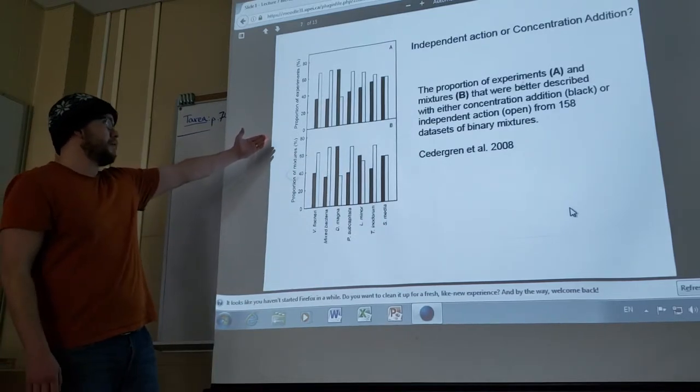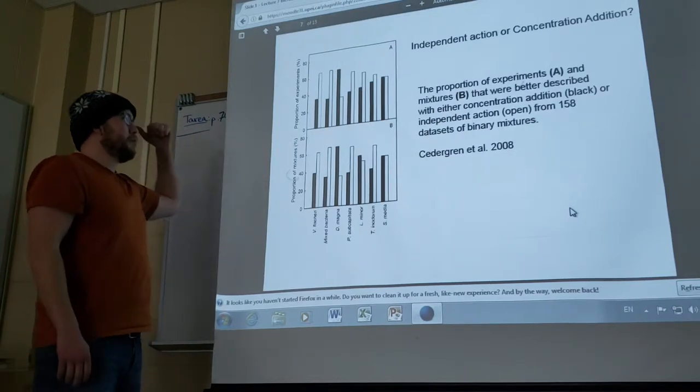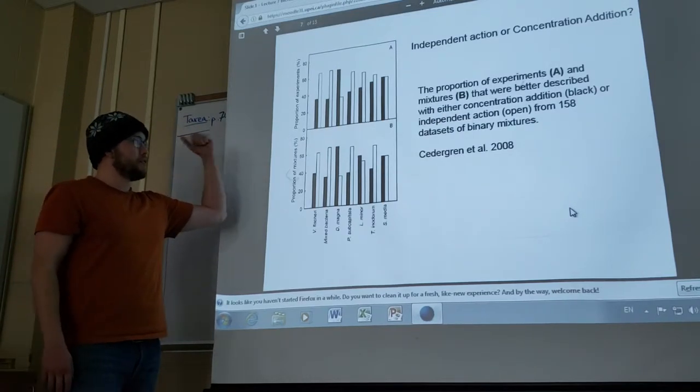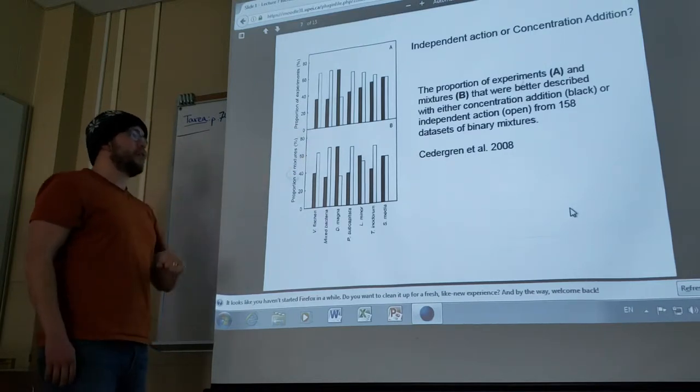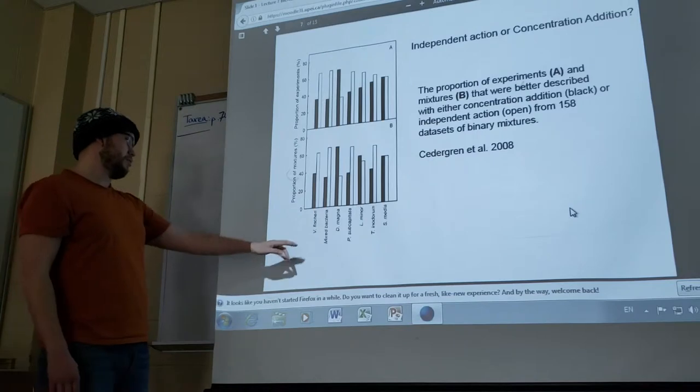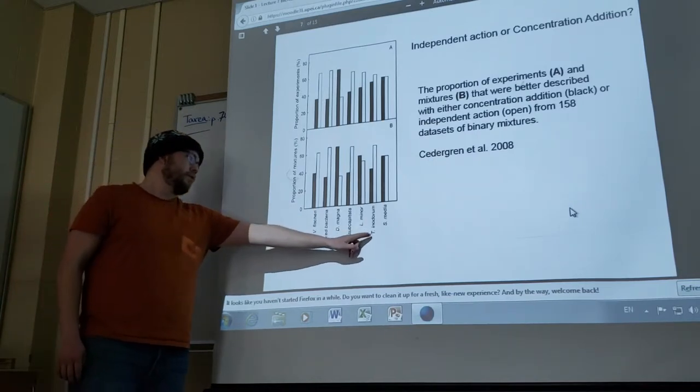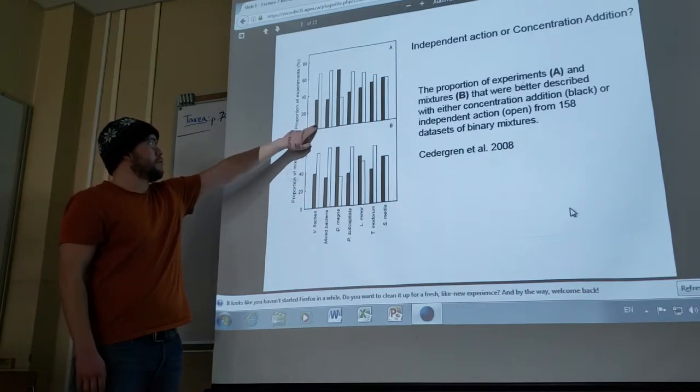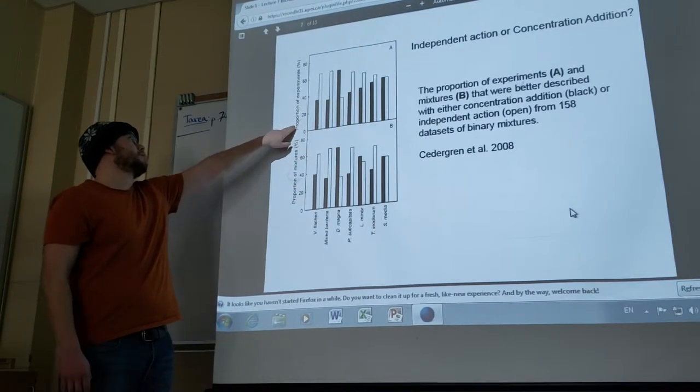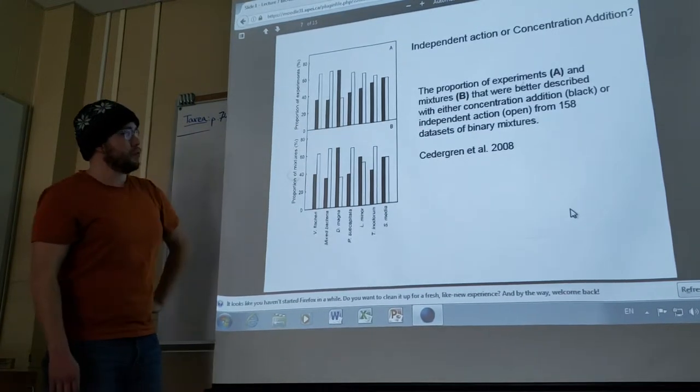Here we see independent action or concentration addition. The proportion of experiments in mixtures that were better described with either concentration addition shown in black or independent action shown in the open from 150 datasets of binary mixtures. You can see the different names here and whether independent action was used more to determine the experiments or concentration addition. You can see it varies depending on the organism.